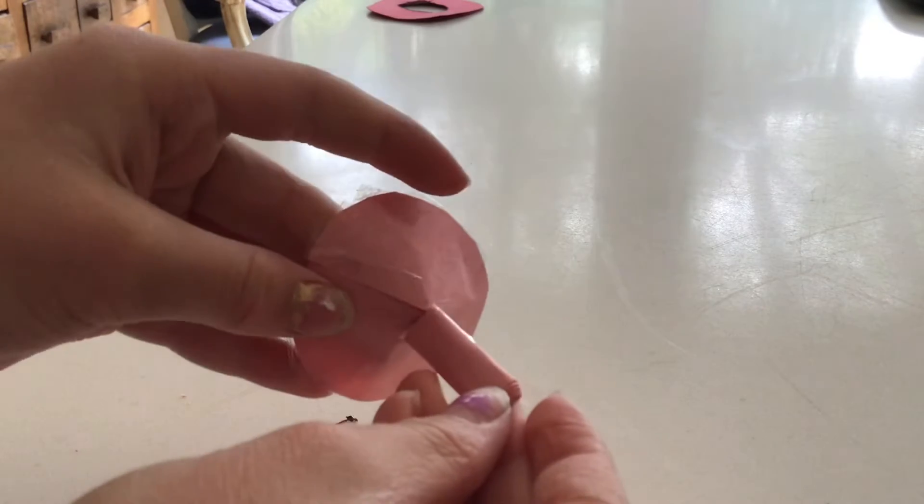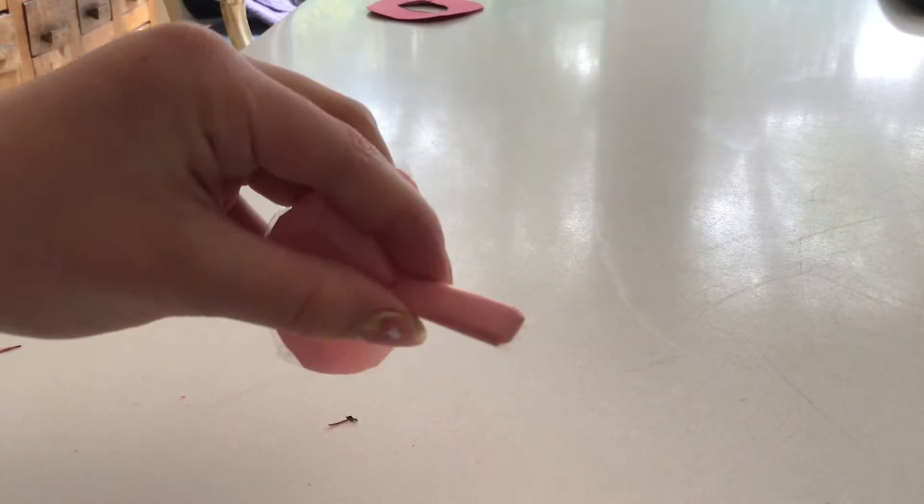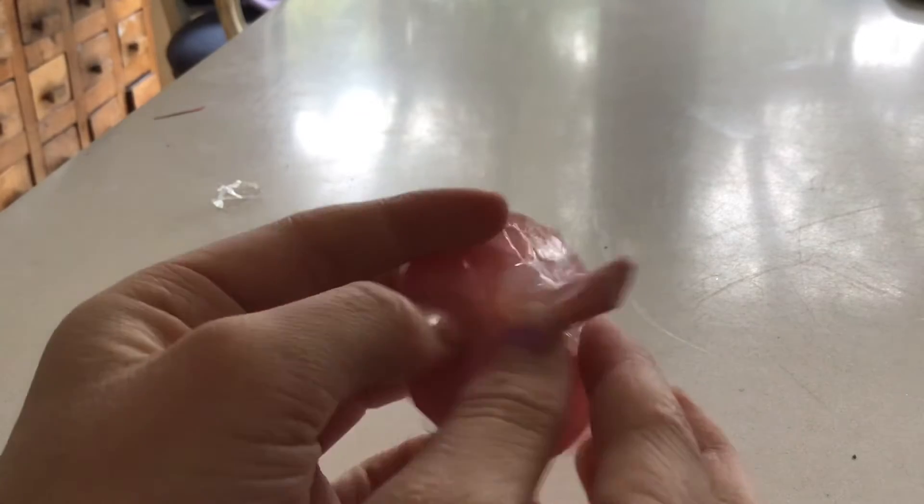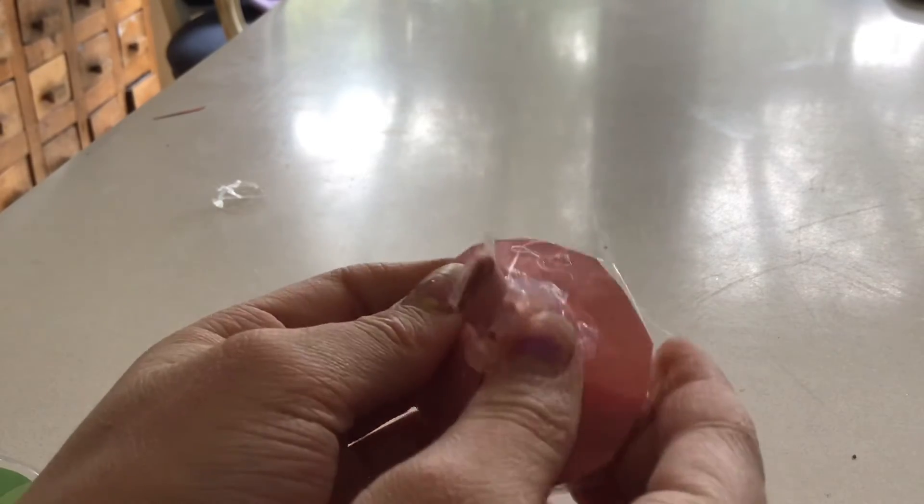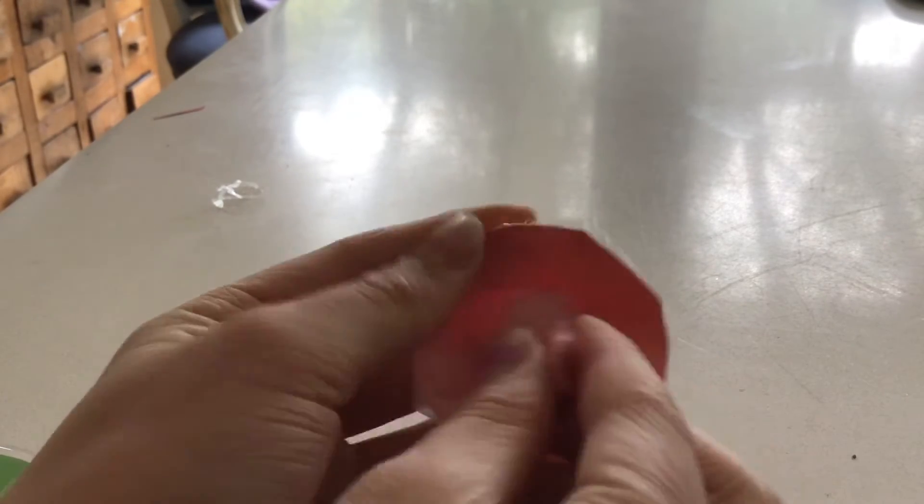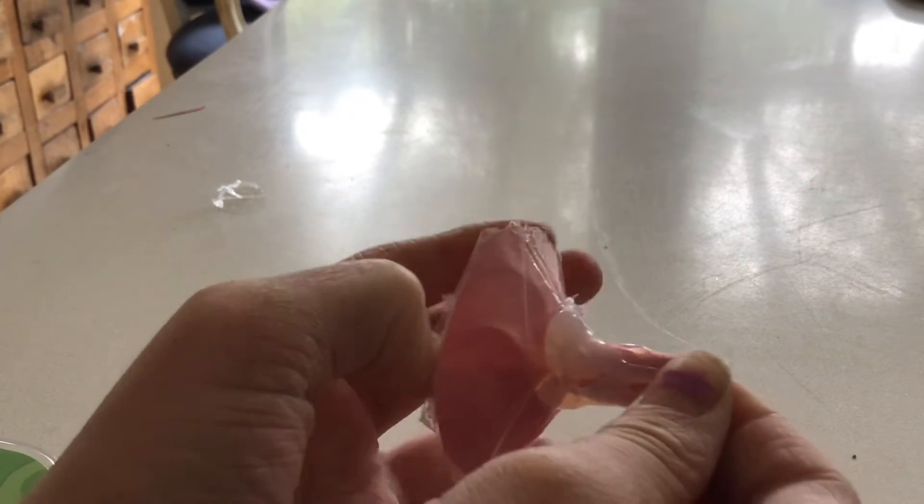Then glue the roll onto the dimple, like this. Then when you pop it in, you can pull it and pop it out.